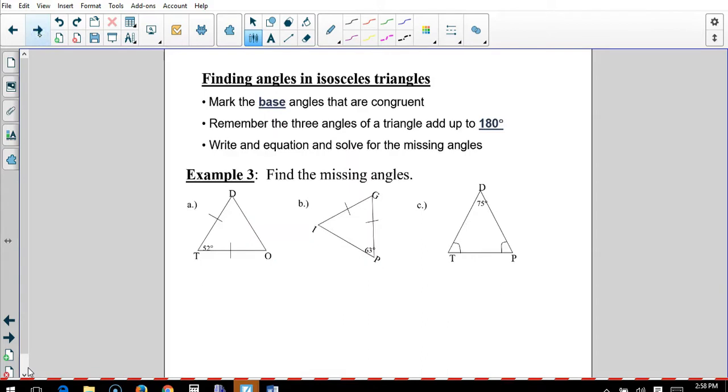Okay. Finding angles. Mark the base angles that are congruent. Right? Then, remember the three angles add up to 180. Write an equation and solve for the missing angle. So, here's my leg. There's one base angle. There's another base angle. So, congruent. So, this is X and this is X. They're both X's, which means X plus X plus 52 adds up to 180. That's 2X plus 52 equals 180. Subtract 52. 180 minus 50 is 130. Minus another 2, 128. Divide by 2, X is 64 degrees. So, this is 64 degrees. This is 64 degrees. And 52. They'll all add up to 180.